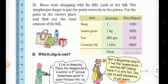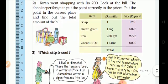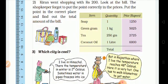We will see the items. First item: soap — quantity one. Green gram — one kilo. Tea — 250 grams. Coconut oil — one litre. We have the item, quantity, and price columns.